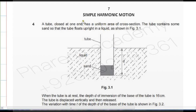Bismillahirrahmanirrahim. This is a simple harmonic motion chapter, question number 4 from past papers. A tube closed at one end has a uniform area of cross section. The tube contains some sand so that the tube floats upright in liquid as shown. When the tube is at rest, the depth of immersion of the base of the tube is 16 cm.